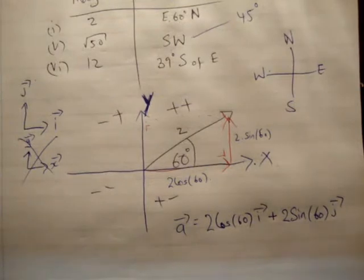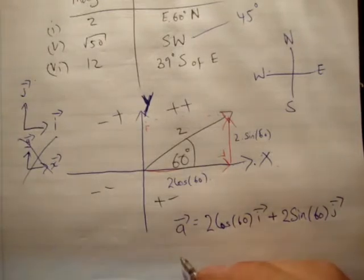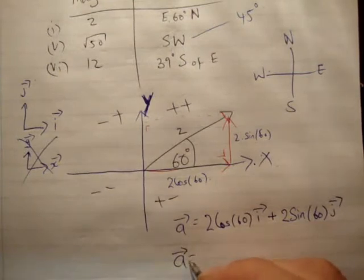Let's just check that in the back of the book to see if I'm correct. Question 1D, i-hat plus root 3 j-hat. Well, you know something, it could be that I haven't simplified it as much as I can.